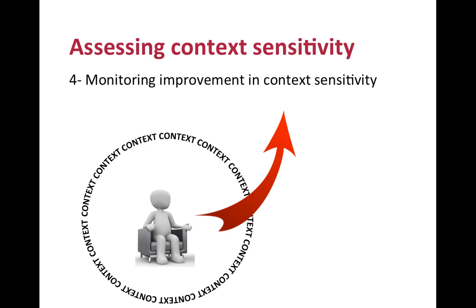Improvements can be measured moment by moment and over time. Generally, an improvement in context sensitivity is reflected by new observations and new responses to contextual variables. The client is more aware of the relevant elements of the context, and responds to these elements in a way that is more useful to pursue his meaningful goals. New responses can look different ways, and what is effective depends on each client's specific situation. Sometimes just a change is already a good sign — it means that flexibility is increased, even if the new behavior is not yet effective.